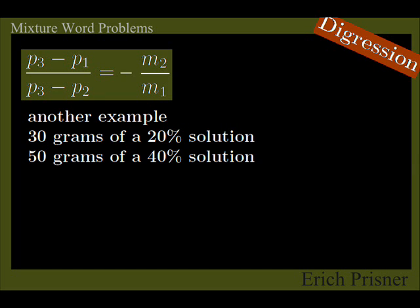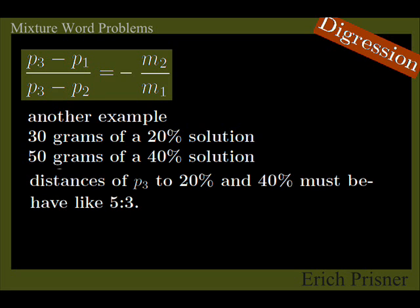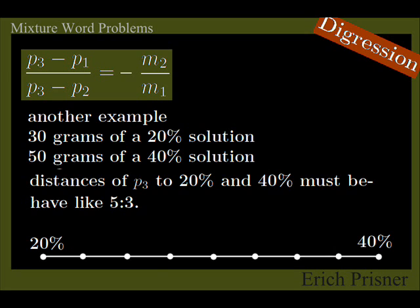To apply this to another example, what is the percentage when you pour together 30 grams of a 20% solution and 50 grams of a 40% solution? The masses behave like 3 to 5, so the distances of P3 to 20% and 40% must behave like 5 to 3. We cut the interval between 20% and 40% into 8 equal parts and get P3 must be 32.5%.